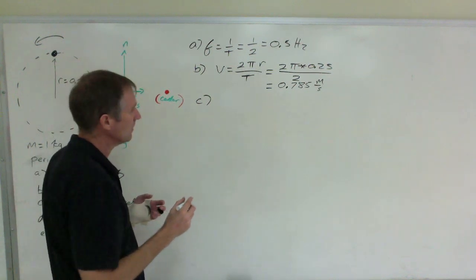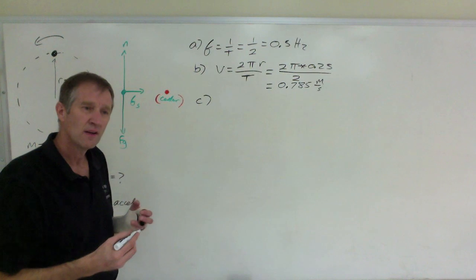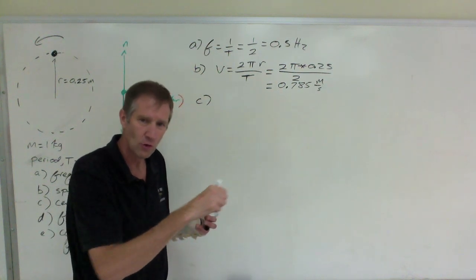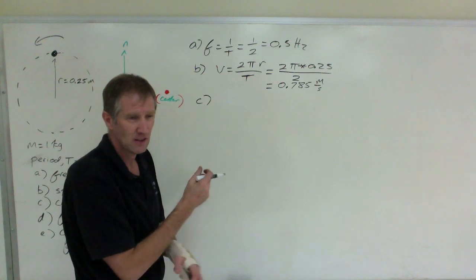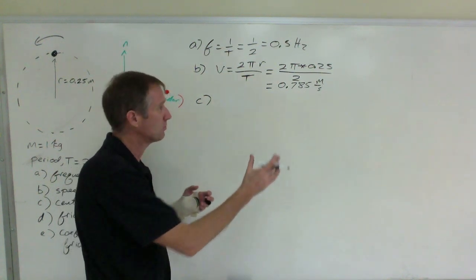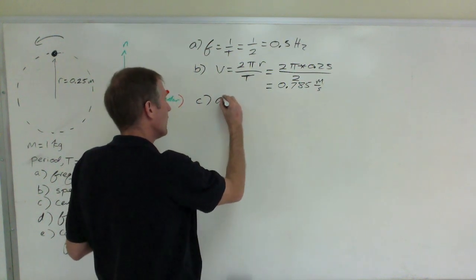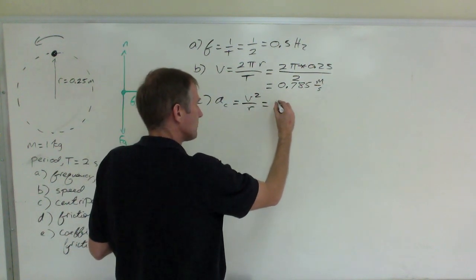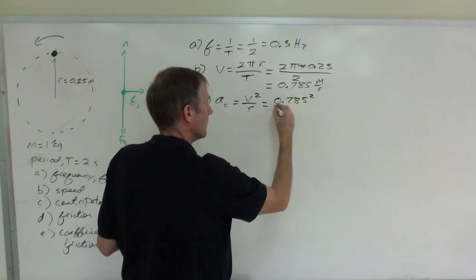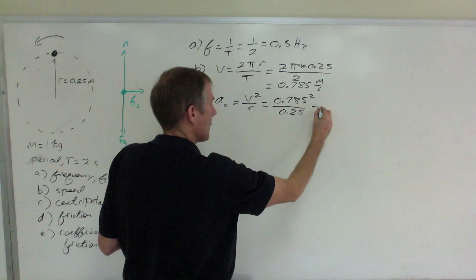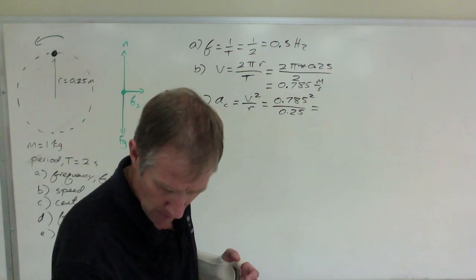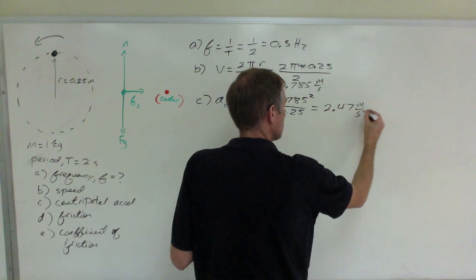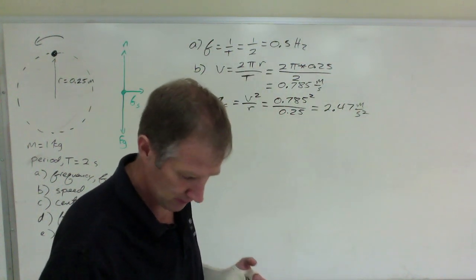The centripetal acceleration, sometimes referred to as the radial acceleration, is the acceleration due to the fact that it's turning and changing direction. It's accelerating at constant speed because its direction is changing. Acceleration is the rate of change of velocity; velocity is speed and direction — the speed stays the same but the direction continually changes. So A_c equals v squared over r: that's 0.785 squared all over 0.25, which gives 2.47 meters per second squared.